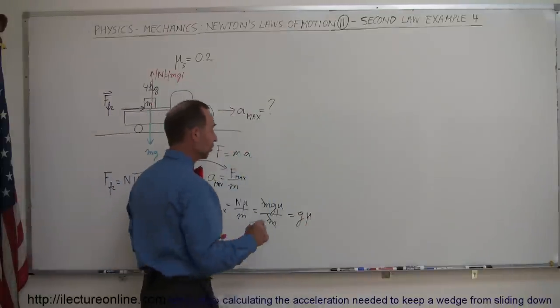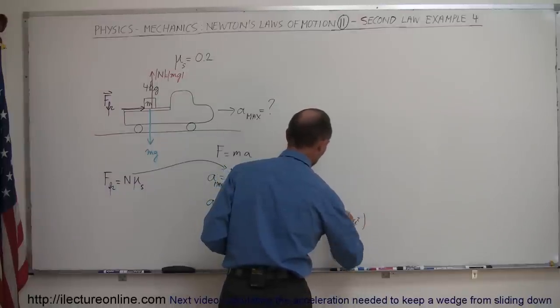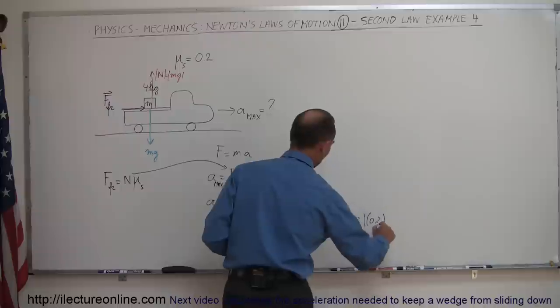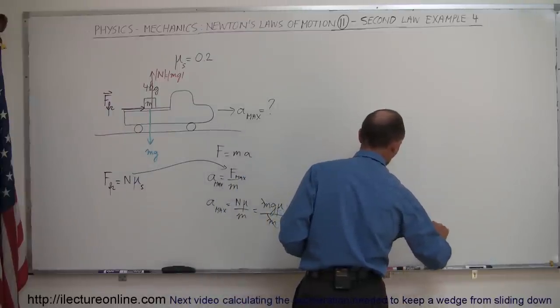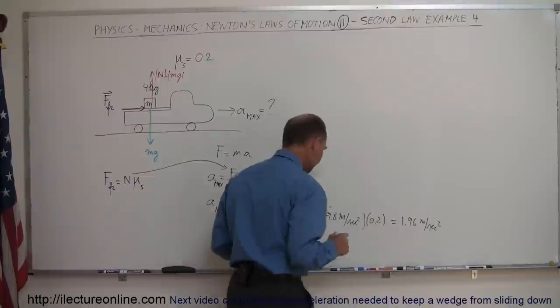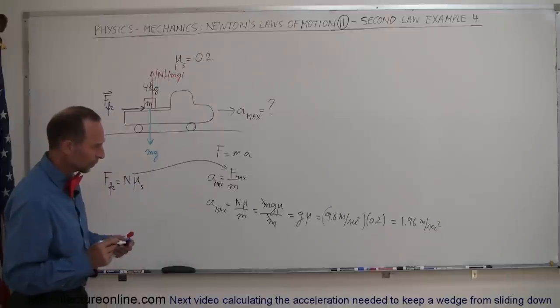In this case, g is 9.8 meters per second squared, and mu is equal to 0.2, so this is equal to 1.96 meters per second squared, out to three significant figures. So 9.8 times 2, that's 19.6, that would be correct.